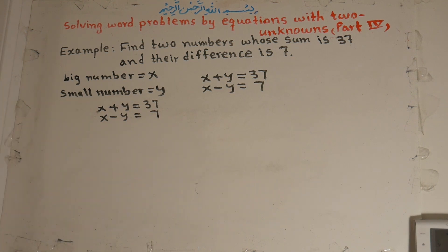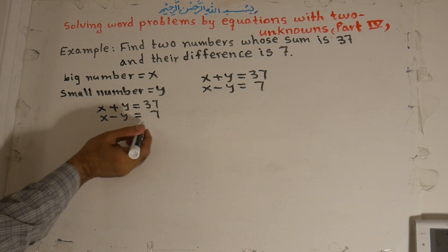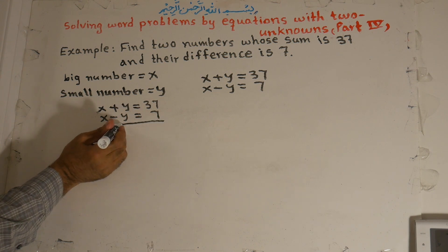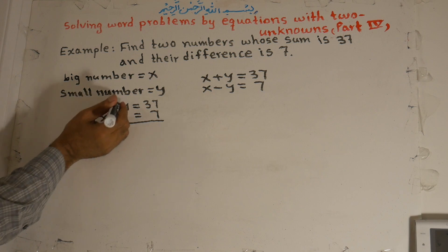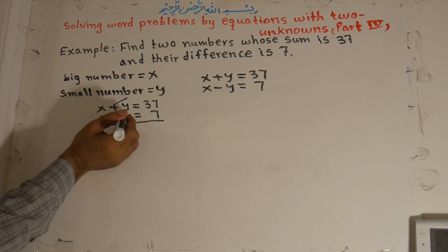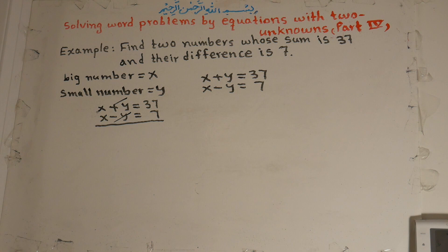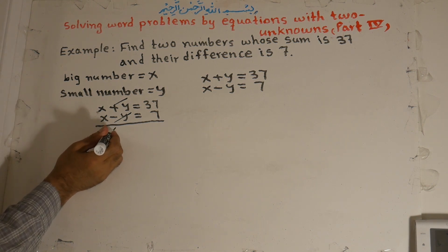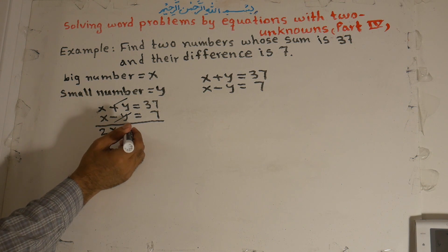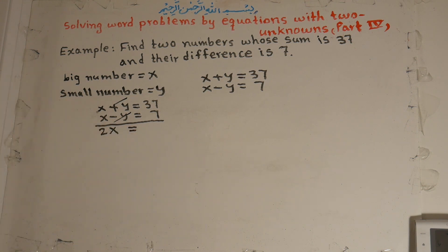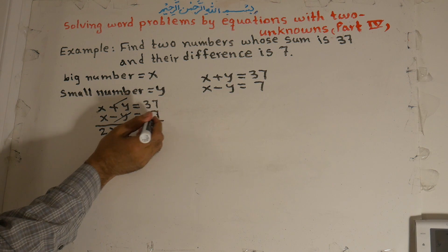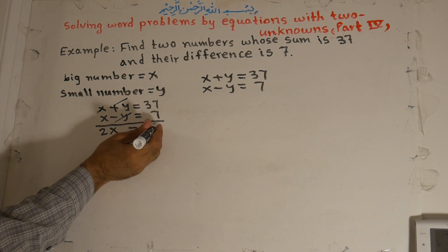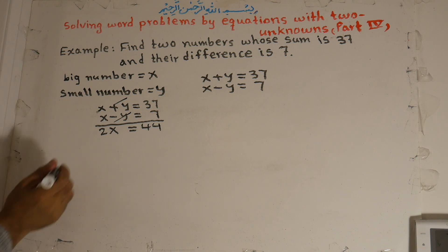Now we add these two equations. The positive y and negative y cancel each other. We are left with x plus x, which is 2x, and 37 plus 7 is 44. So 2x is equal to 44.